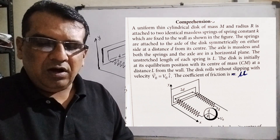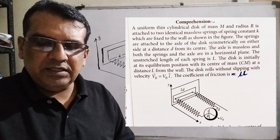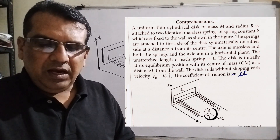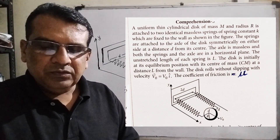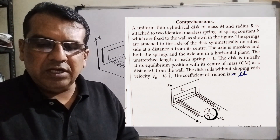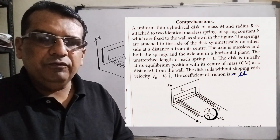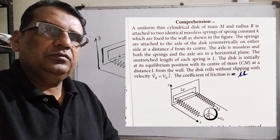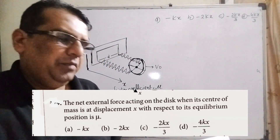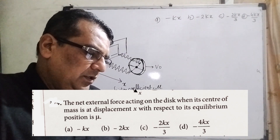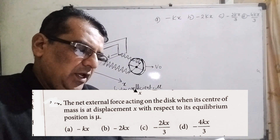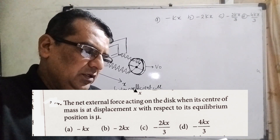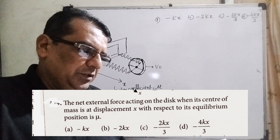The unstretched length of each spring is l. The disk is initially at its equilibrium position with its center of mass at a distance l from the wall. The disk rolls without slipping with velocity v₀ equal to v₀ î. The coefficient of friction is μ. The first question asks: what is the net external force acting on the disk when its center of mass is at displacement x with respect to the equilibrium position?